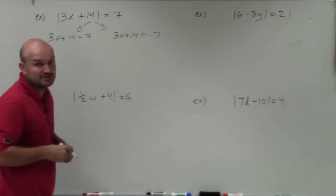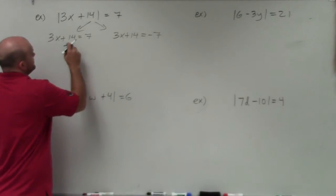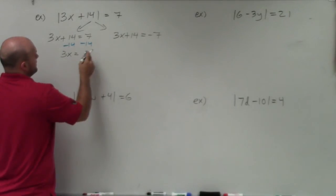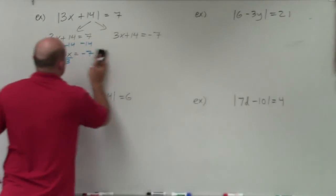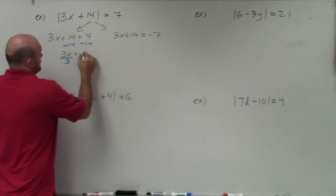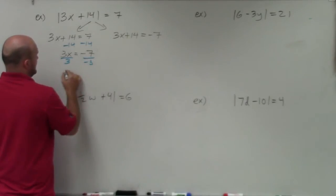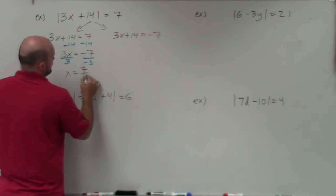Then, all we're going to be doing is using our inverse operations. You subtract 14 on both sides. By doing that, you get 3x equals negative 7. Divide by 3. Why am I doing that negative 7? Divide by negative 3, and you have x equals positive 7 thirds.